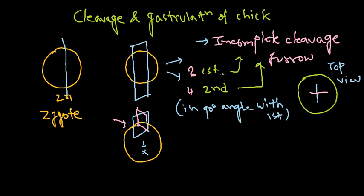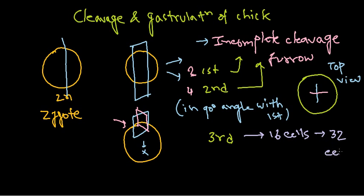So to summarize so far: first cleavage — incomplete furrow, cells not separated apart; second cleavage — same type, incomplete, at 90 degrees, also longitudinal, giving four cells arranged together. From the third cleavage onward, division starts to occur very rapidly, soon forming 16 cells and then 32 cells. When 32 cells are reached, this is the phase when we call the embryo a blastocyst.